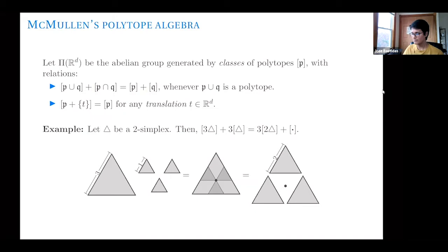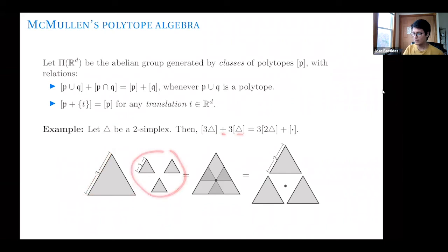Let me show you a pretty and interesting identity that holds in this group as we have defined it. Let me denote by this triangle the two-dimensional simplex — the small one with side length one. I want to convince you that this identity is true in this group: the class of three times the simplex equals three copies of the second dilation of the simplex — multiply by two — and a class of a point.